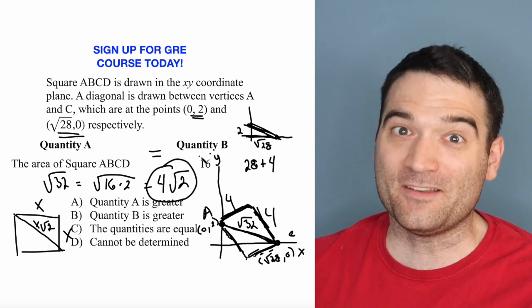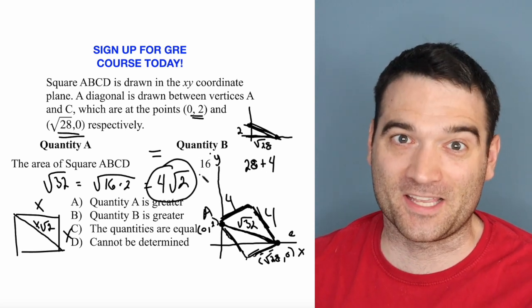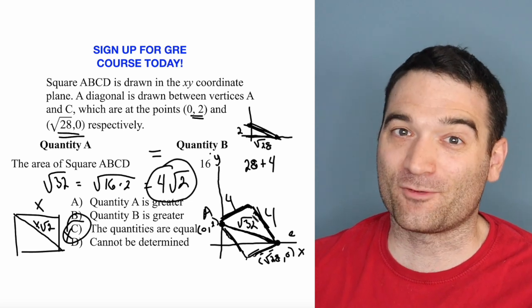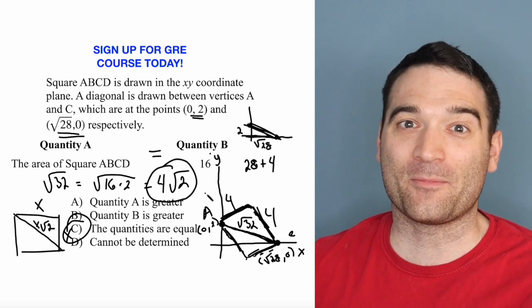So that means that the area of the square is, in fact, equal to 16. For more GRE tips and tricks, or to sign up for my online course, follow the link on my profile.